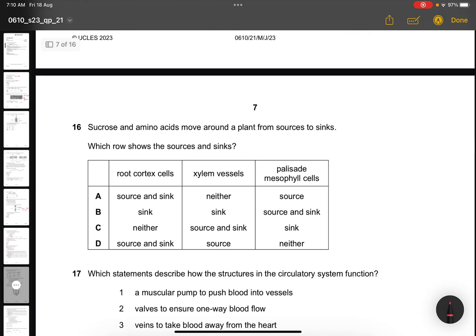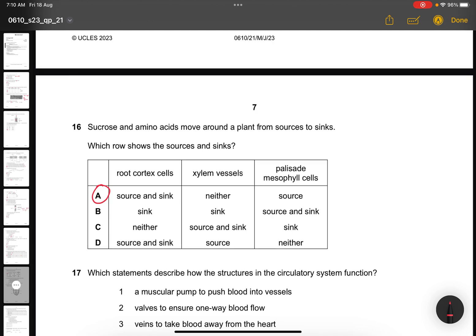Question 16. Sucrose and amino acids move around the plant from source to sink. Which row shows the sources and sink? The answer would be A, because palisade mesophyll cell produces the glucose and is then converted to sucrose. So it acts as a source. The amino acids and the sucrose are going down to the root hair cell, which is a sink. But at the same time, the root cortex cell can also be a source during winter times, when the plant does not produce anything. The root cortex cell will release this sucrose to maintain the plant.